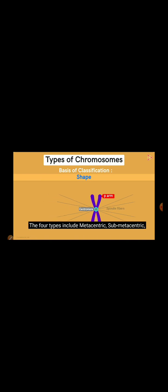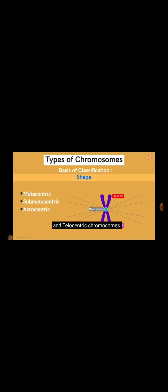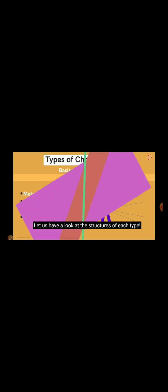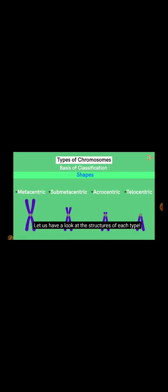It's the position of the Centromere that helps us categorize the chromosomes into four types. The four types include metacentric, submetacentric, acrocentric and telocentric chromosomes. Let's have a look at the structures of each type. Aren't these simple to understand?